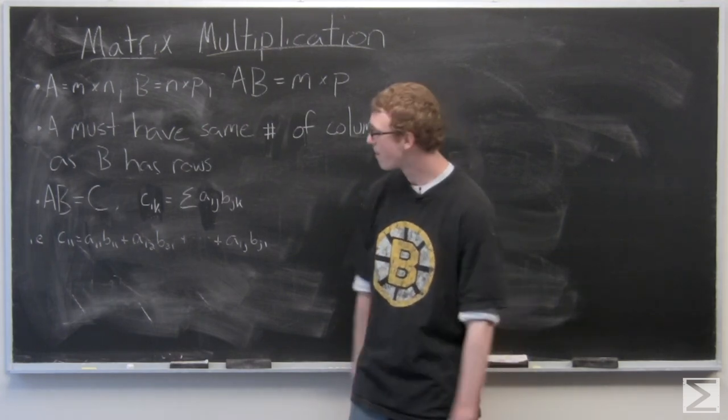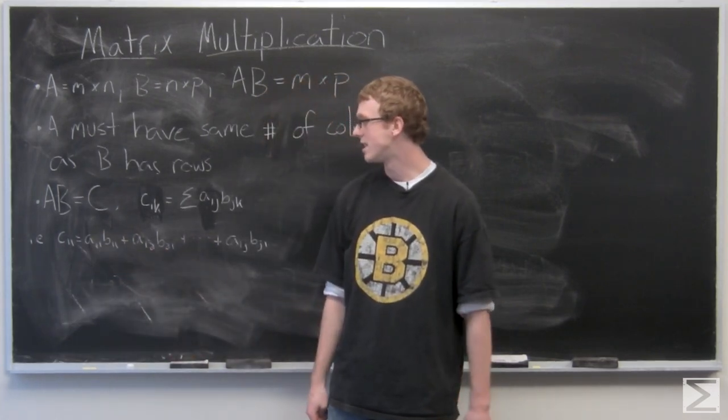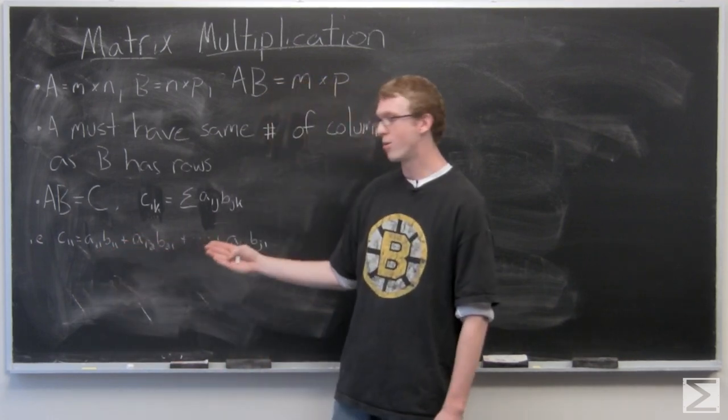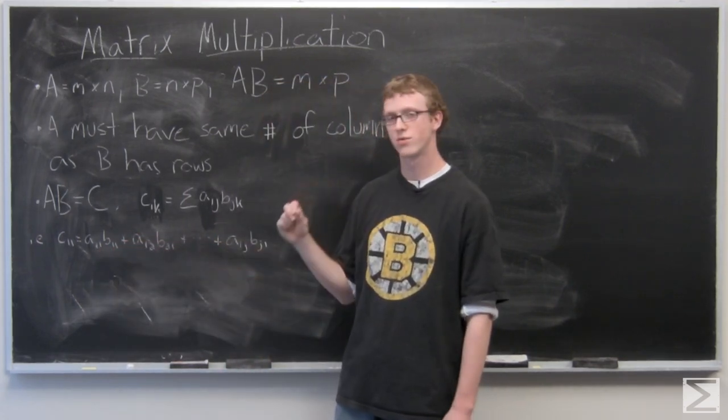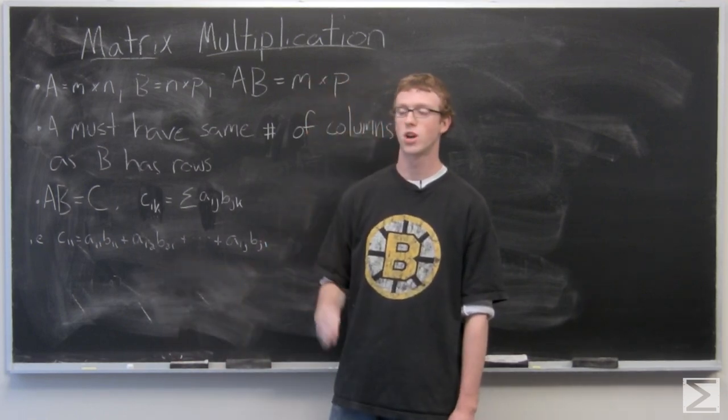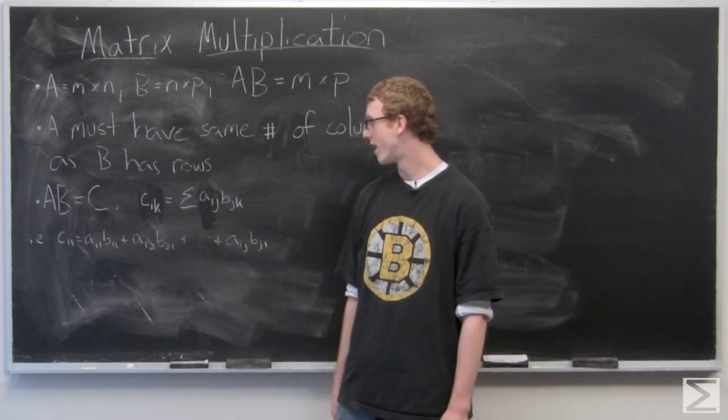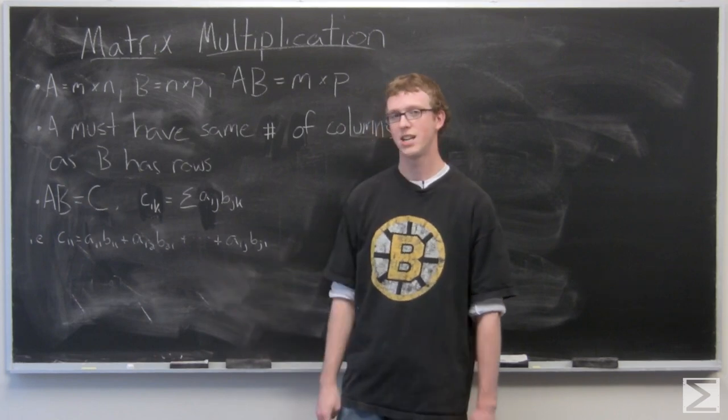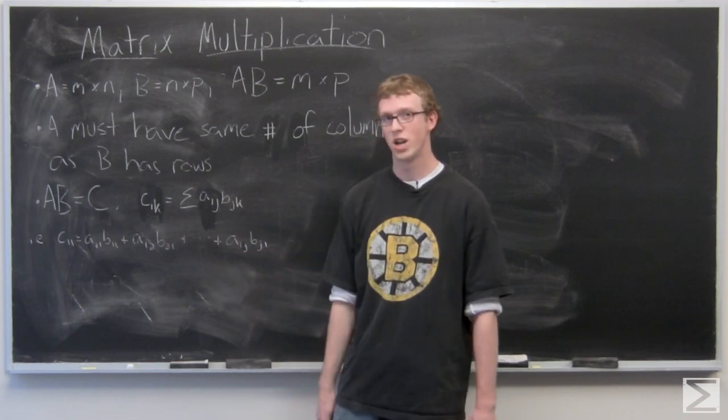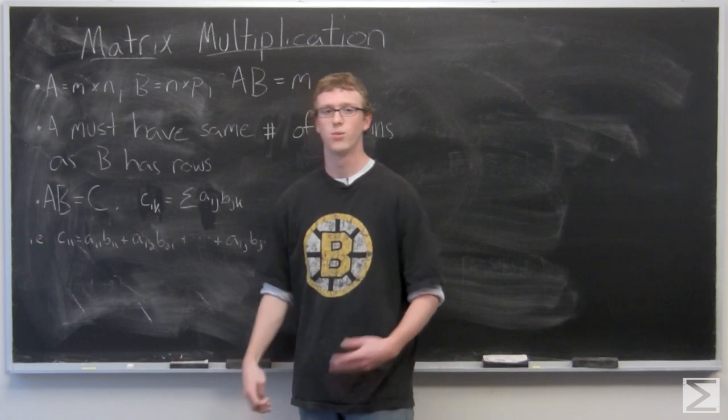So basically what that means, the first entry of matrix C is going to be A11 times B11 plus A12, that's the first row, second column times B21, that's the second row, first column. And it's going to continue like that until you get to the end of the first row of A. So you have A1J and then until you get to the bottom of the first column of B, BJ1. And those are going to add together. All of that adds together to make C11.